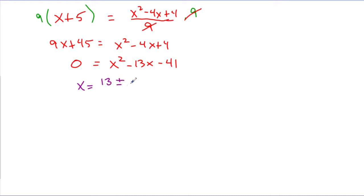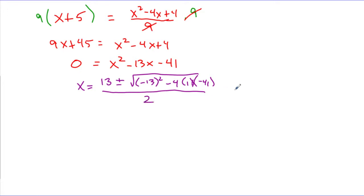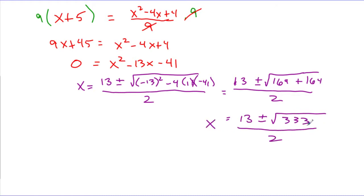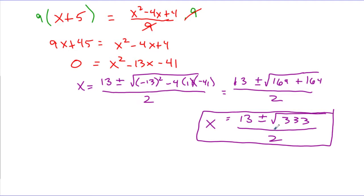Using the quadratic formula, this looks like 13 plus or minus — inside the radical I have negative 13 squared minus 4 times 1 times negative 41 — all over 2a, where a is 1, so it's over 2. Simplifying inside the radical: negative 13 squared is 169, and negative 4 times 1 times negative 41 gives positive 164. So that's 169 plus 164 over 2, which gives 13 plus or minus the square root of 333, all over 2. This is as simple as I can make that radical, so I'll leave it in simplest radical form. This represents my solution. It's not nice, but it is the simplest radical form.